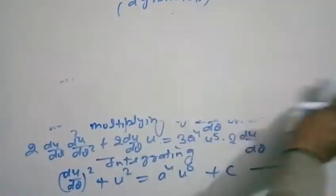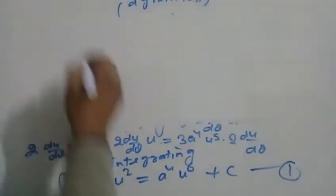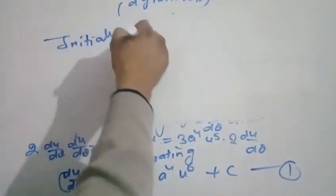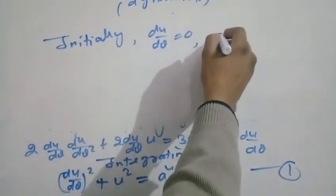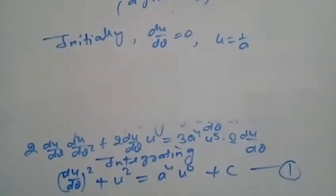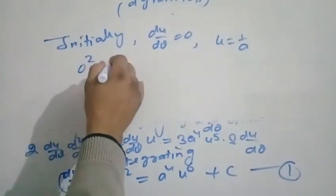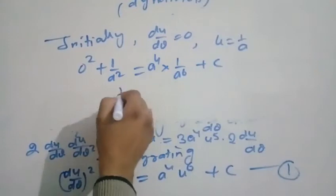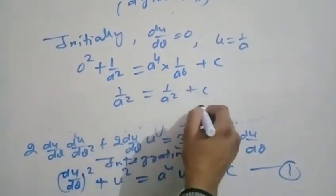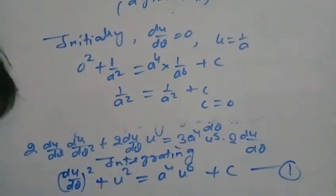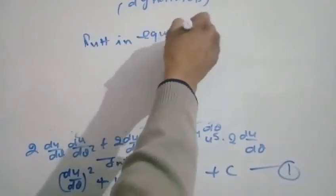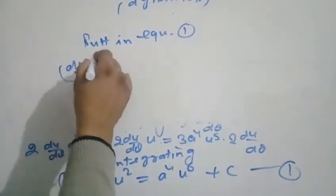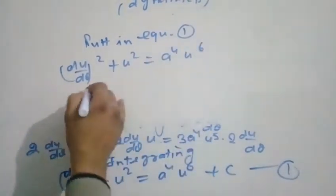Applying initial conditions: at θ = 0, u = 1/a and du/dθ = 0. Substituting: 0 + (1/a)² = a⁴·(1/a)⁶ + C, giving 1/a² = 1/a² + C. Therefore C = 0. So the equation is: (du/dθ)² + u² = a⁴u⁶.